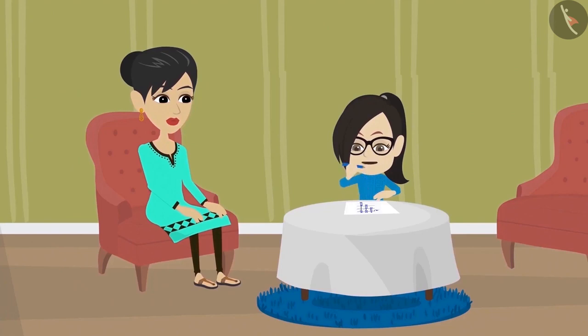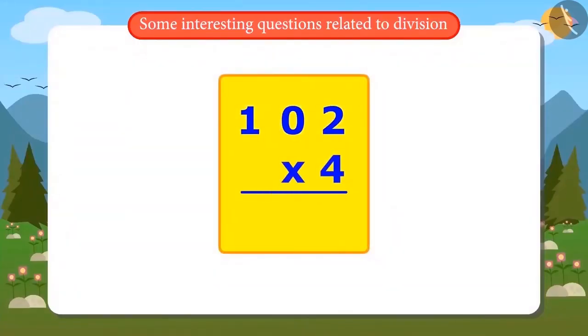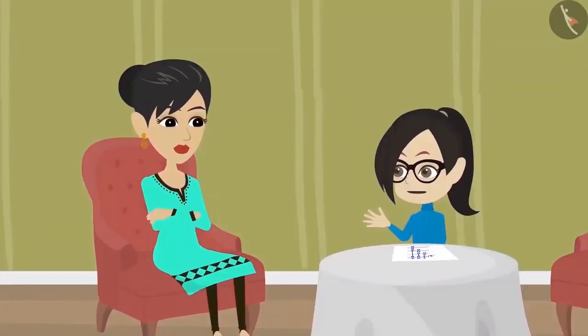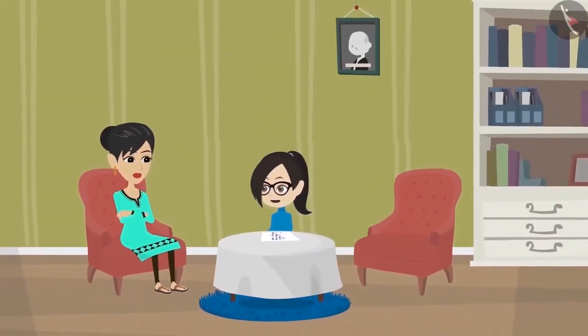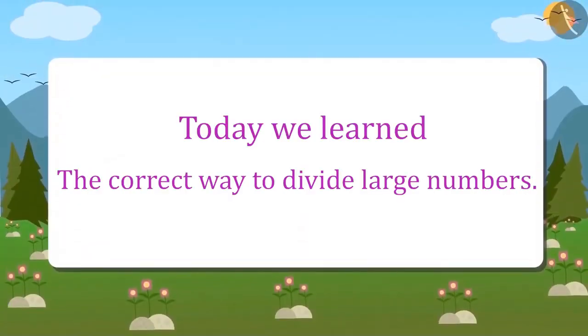Yes. To multiply 102 by 4, I will write it like this. And now I will multiply. The answer came 408. That means I divided it correctly. Today we learned what is the correct way of dividing large numbers.